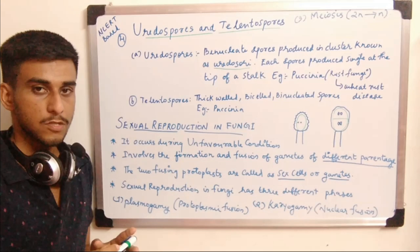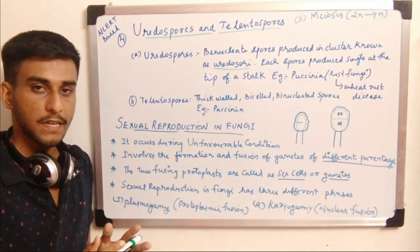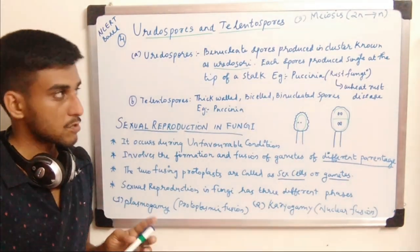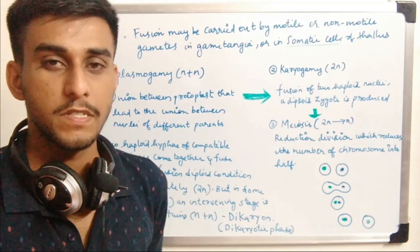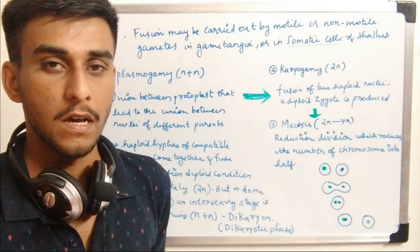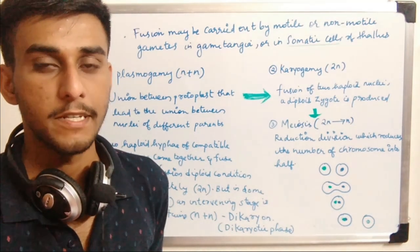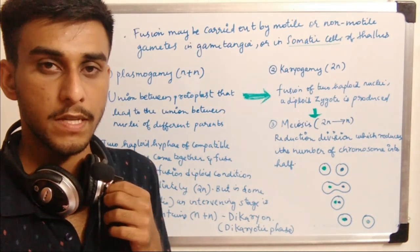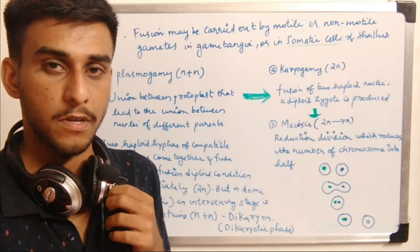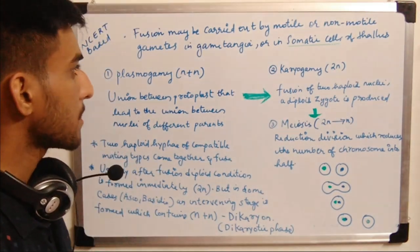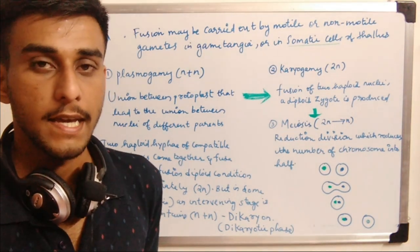In sexual reproduction of fungi, the fungi reproduce by means of certain gametes or by means of somatic cells. The somatic cells of the fungi may get fused together to take part in sexual reproduction. Fusion may be carried out by motile or non-motile gametes.